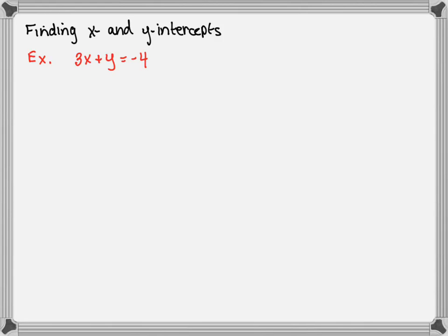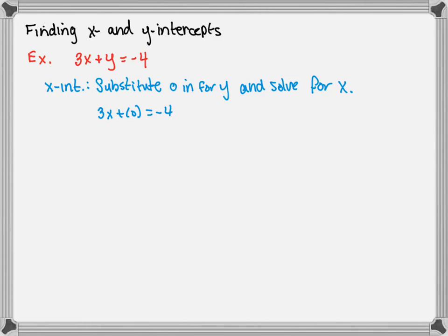Let's actually find the x and y intercepts from an equation. We'll use 3x + y = −4. It doesn't have to be a linear equation — it could be quadratic, exponential, or logarithmic. To find the x-intercept, no matter the function type, substitute 0 in for y and solve for x. We get 3x = −4, so x = −4/3. Our x-intercept is (−4/3, 0).